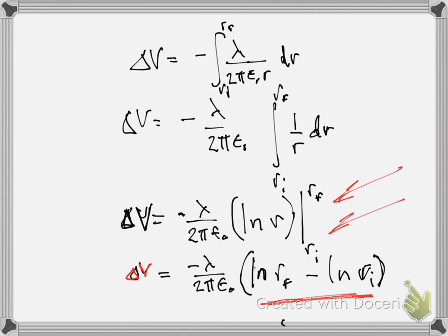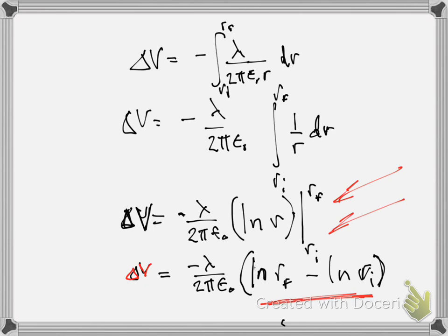When we evaluate the integral at its limits, we get the natural log at the top limit minus the natural log at the bottom limit. Now, the natural log of one number minus another number is not equal to the natural log of RF minus RI. But it turns out — from the definition of natural log — that ln(RF) minus ln(RI) equals the natural log of RF divided by RI.